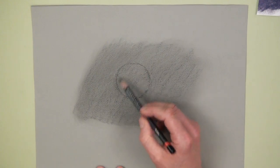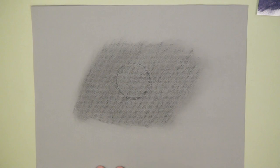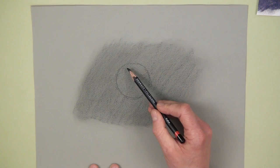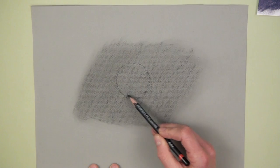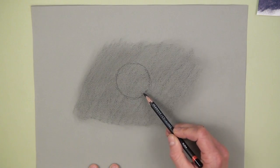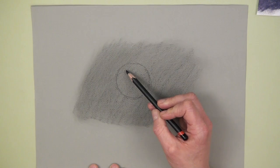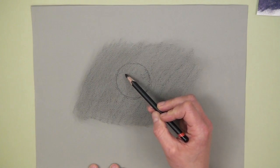And now we want to turn this circle into a sphere or half a sphere, a dome shape. The way that I'm going to do that is to add a little bit of darker value to the top, gradually getting lighter so that we've got the lightest area down the bottom.